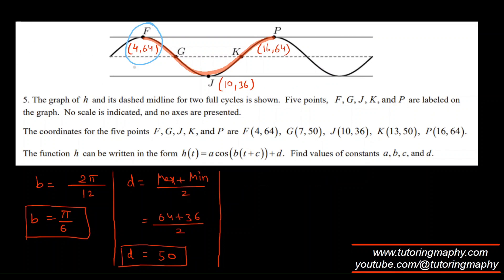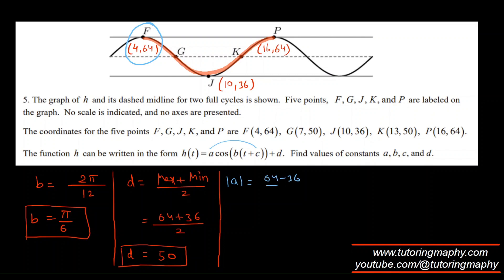Now for A and C — there's flexibility here. You can take A as positive or negative and the corresponding C will adjust. The absolute value of A is (64 − 36) / 2 = 28/2 = 14. I'll take A as positive 14.